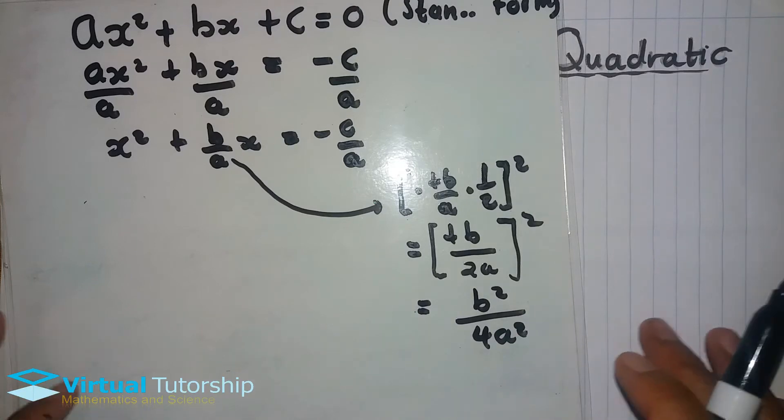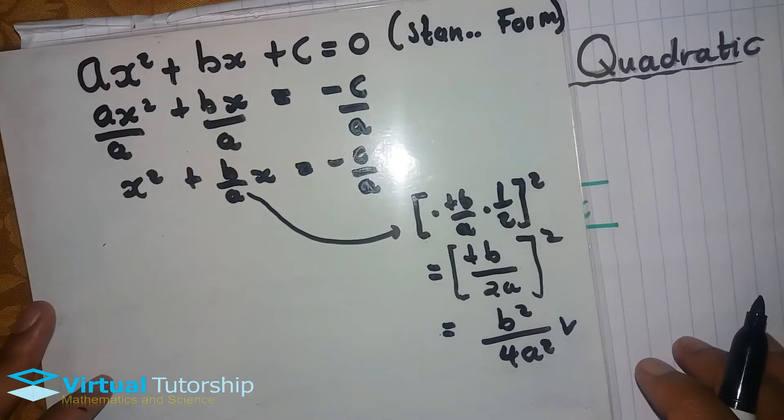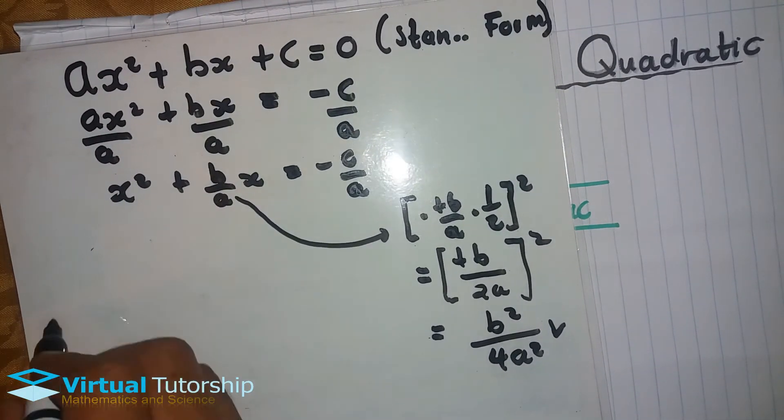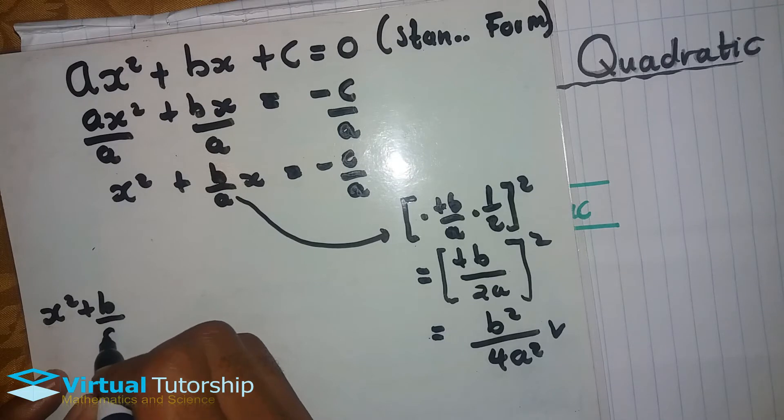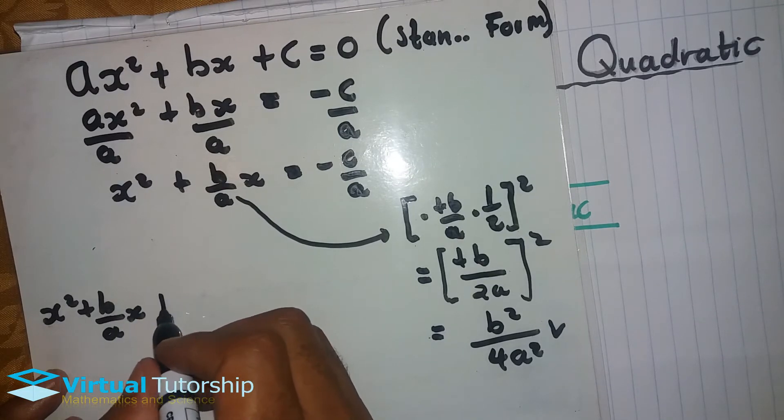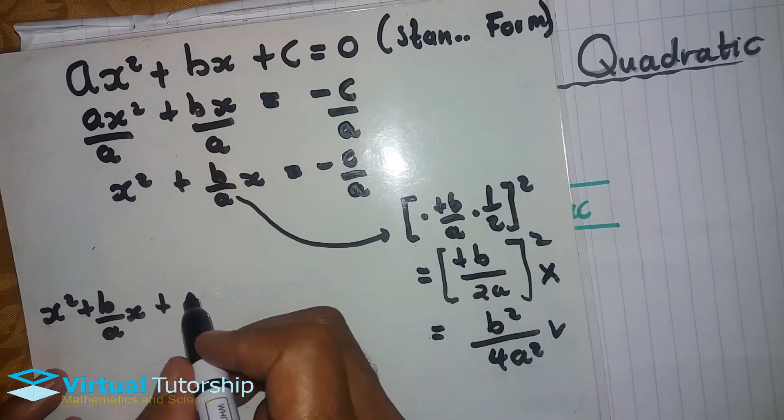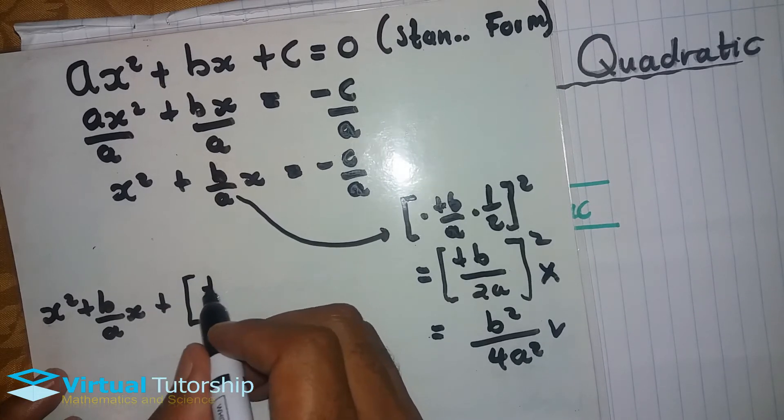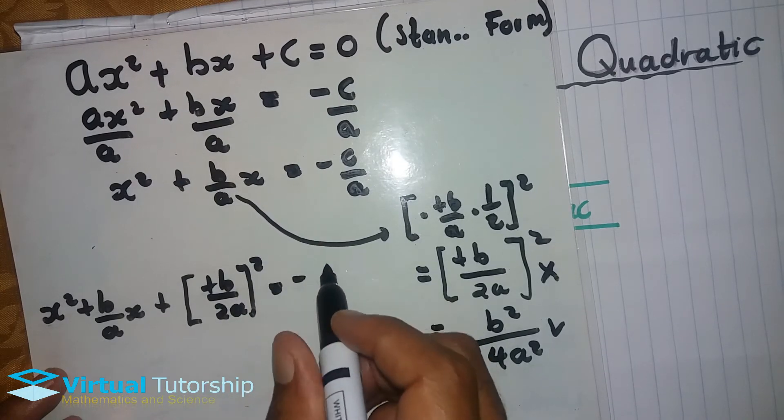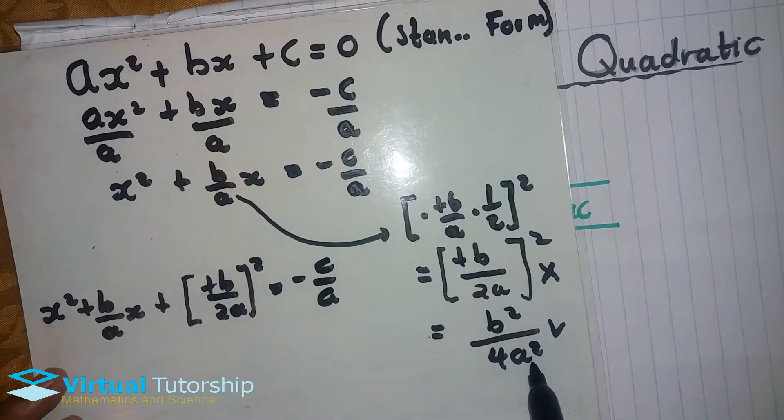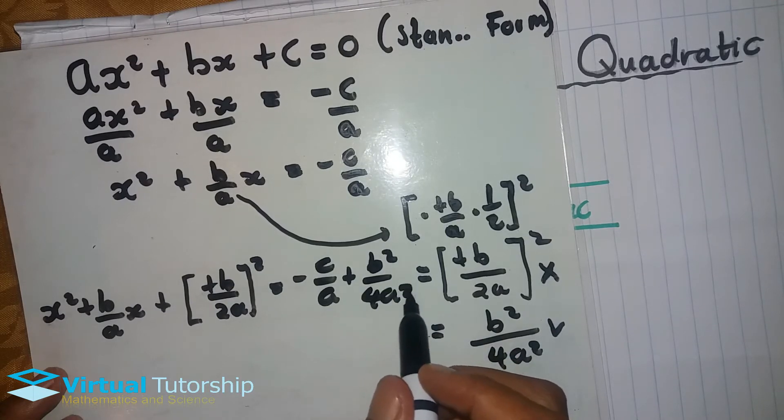After we calculate this, we add this equation to both sides of the equation. So we get x² + (b/a)x plus this value on the left-hand side equals -c/a, then on the right-hand side we add b²/4a².